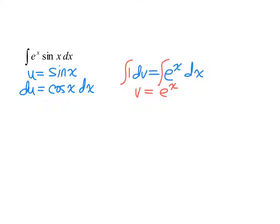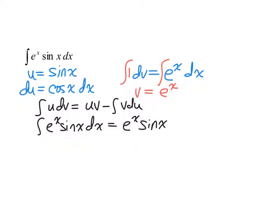So the rule, the integral of u dv is equal to u v minus the integral of v du. In this case, e to the x sine of x dx is equal to u v. So e to the x sine of x minus the integral of e to the x cosine x dx.